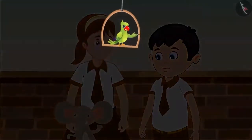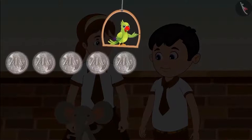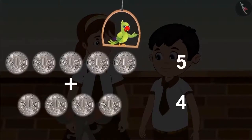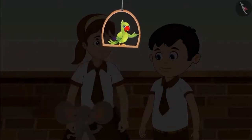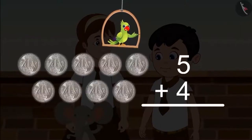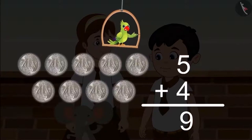Let's see: Chotu has five rupees and Aarti has four rupees. Together they have five, six, seven, eight, nine. We can also write it in an organized manner: when we add five rupees and four rupees, we get nine rupees.